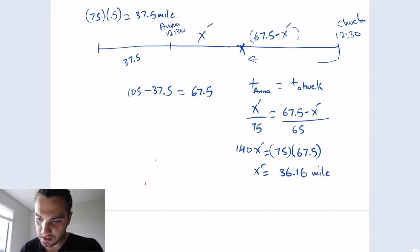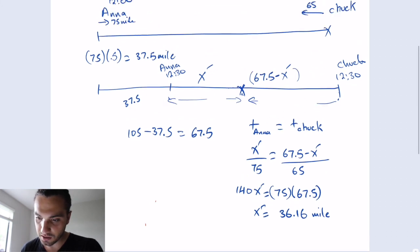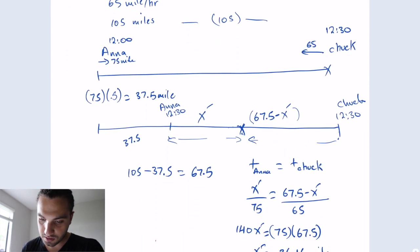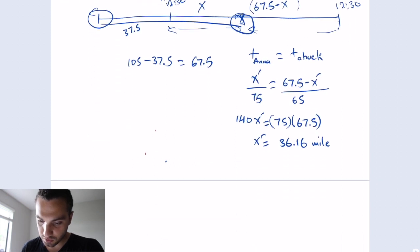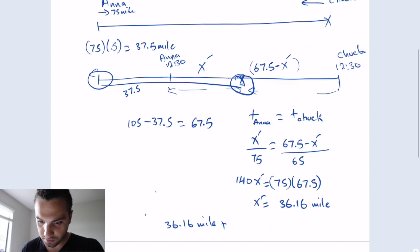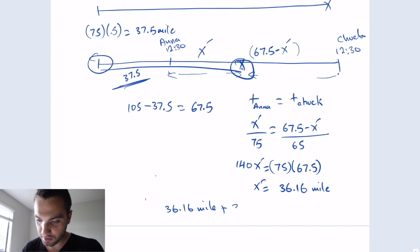So this is the distance in here from coming from this side to this side. This is x prime. But they want the distance, if you look back at the question, from Prospect. How far from the Prospect Avenue. So they want the distance from this point down to the point of intersection. So we add x prime, which is 36.16 miles, plus the original distance, which was 37.5.